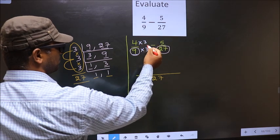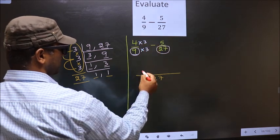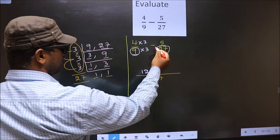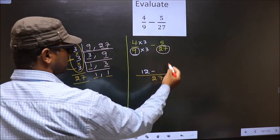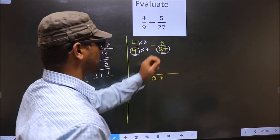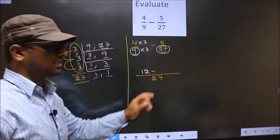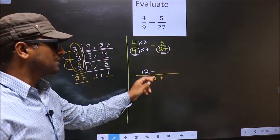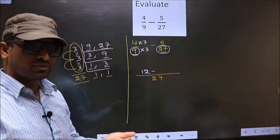Whatever LCM we got here, we should write here in this way. Here we have 9 in the denominator. Here we have 27.